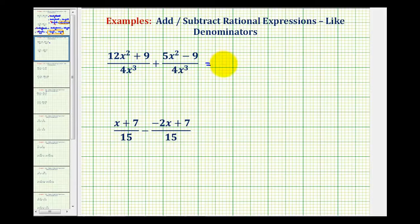For our first example, since both denominators are 4x³, it will stay 4x³. Then we'll add the numerators, so we would have the quantity 12x² + 9 plus the quantity 5x² - 9.